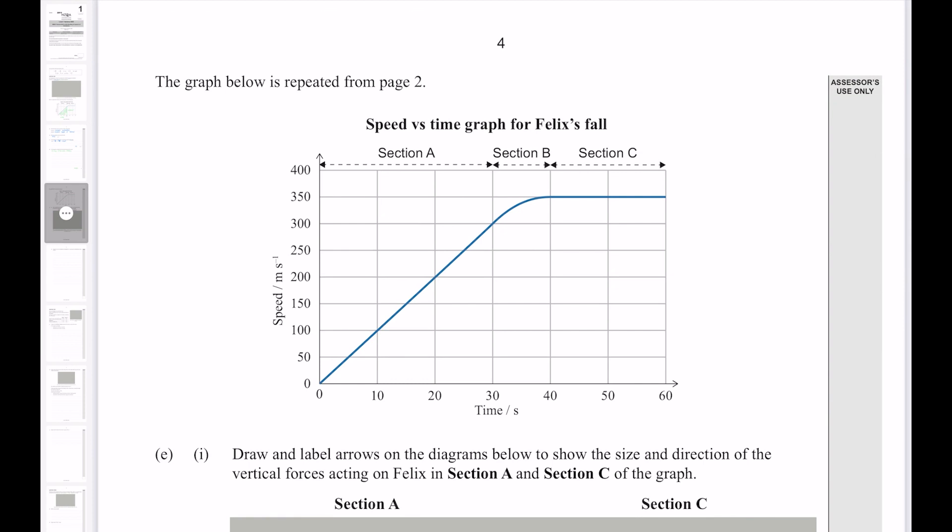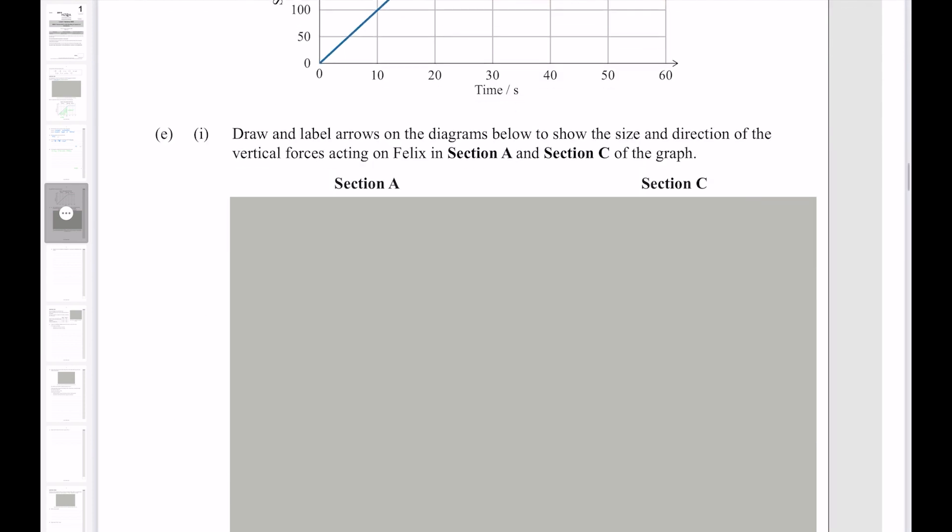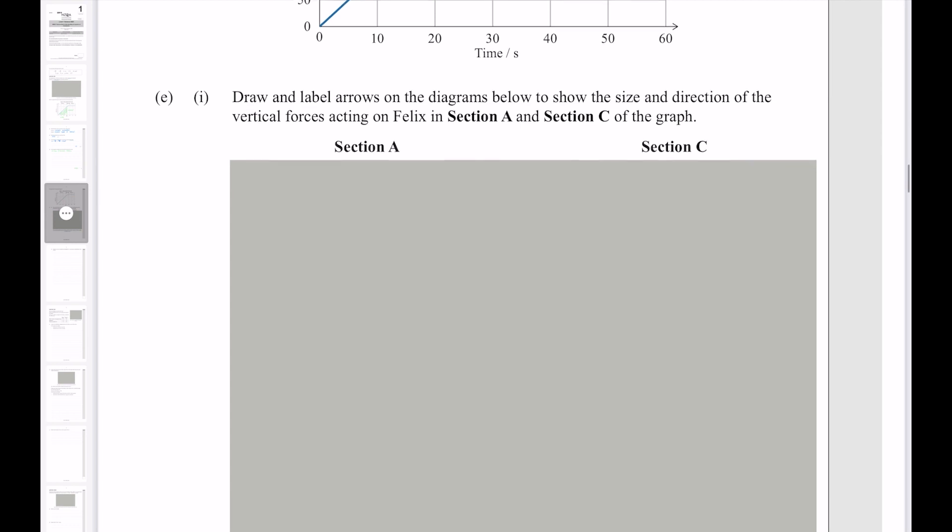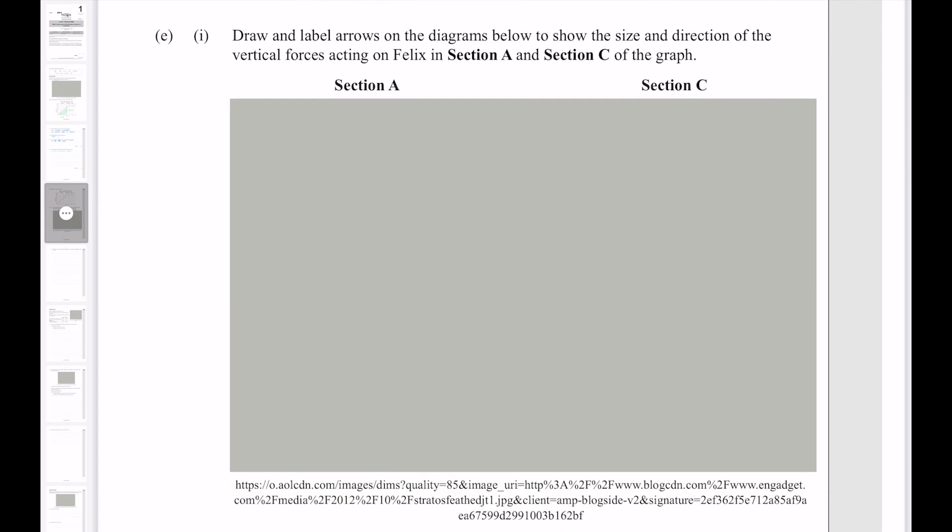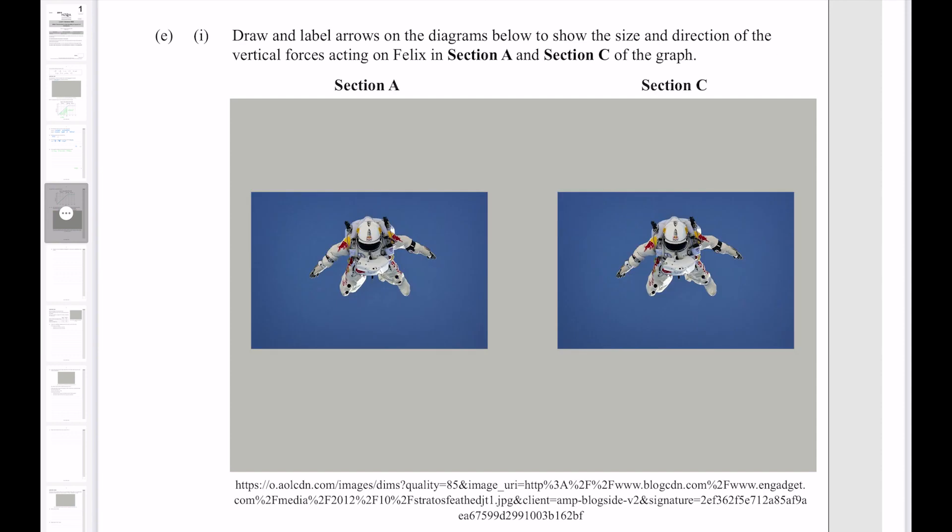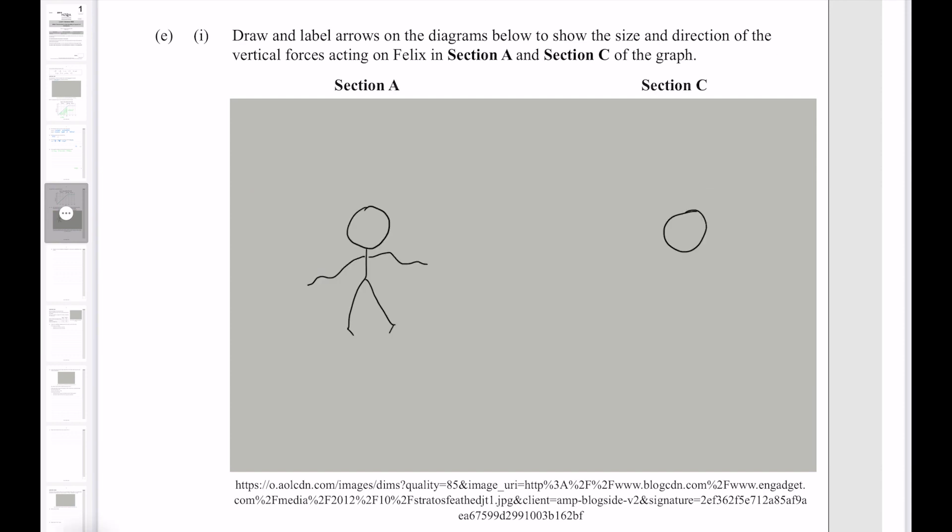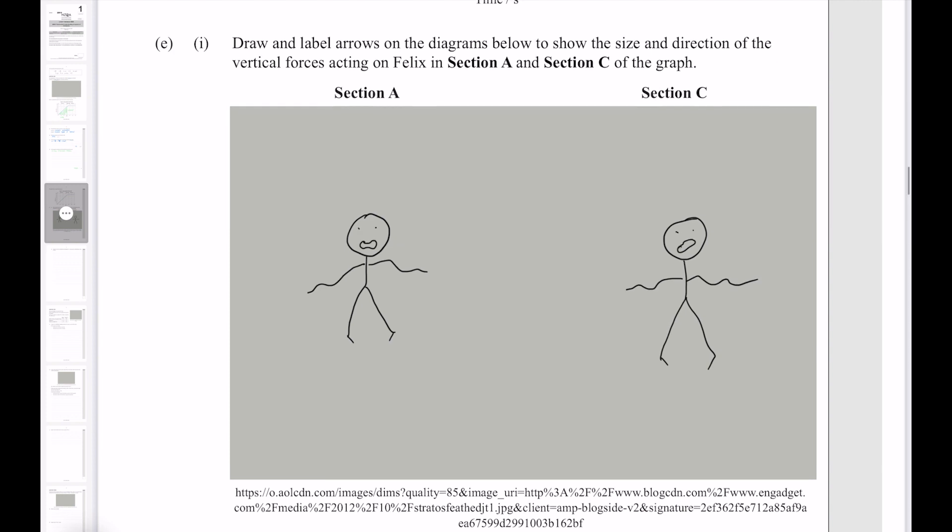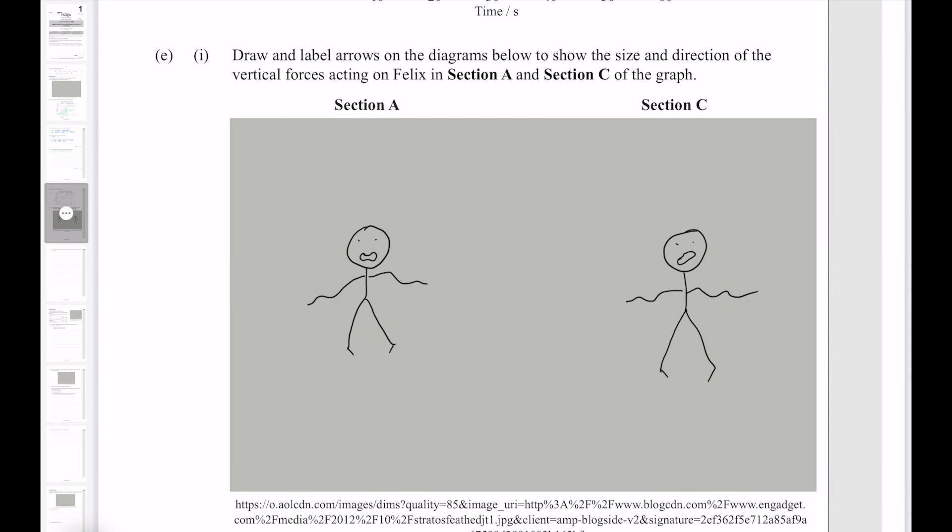Our graph here is repeated from page two. Draw and label the arrows on the diagram below to show the size and direction of the vertical forces acting on Felix in section A and section C of the graph. Now the image that should be there looks like this. So let me just draw in replacements. Perfect. Now the first force that we'll talk about is gravity. The size of the gravity force is dependent on mass. Since Felix's mass does not change, the force of gravity is going to be the same in both scenarios.